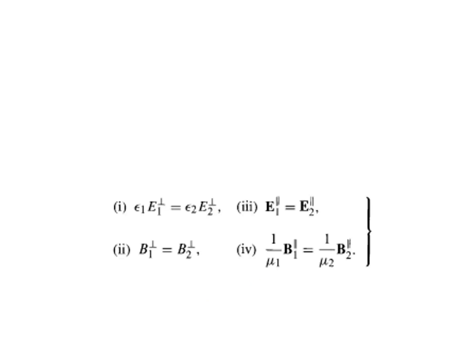The boundary conditions, as we already discussed in some of the previous modules, are the same: epsilon 1 E 1 perpendicular equal to epsilon 2 E 2 perpendicular; B 1 perpendicular equal to B 2 perpendicular; E 1 parallel equal to E 2 parallel; and 1 by mu 1 times B 1 parallel equal to 1 by mu 2 times B 2 parallel. These are the same boundary conditions that we derived. The derivation can be referred to in some of the previous modules.